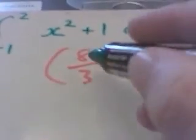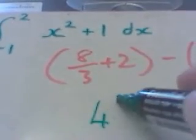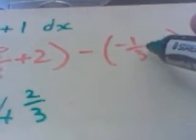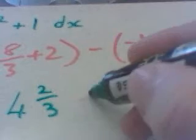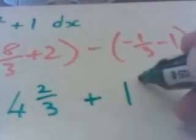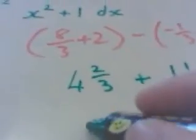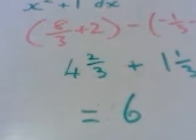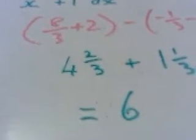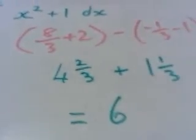So 8 thirds is 2 and 2 thirds, that's 4 and 2 thirds. Now inside this bracket we've got minus 1 and a third, so if we're taking that away we're actually adding 1 and 1 third, and that gives me an answer in total of 4 plus 1 is 5, plus the thirds gives me 6. That's quite a lucky one for us there. Usually you will have an answer left in fractions, but don't worry, you can use your calculator at all points within this.